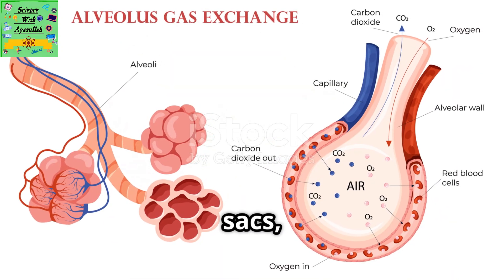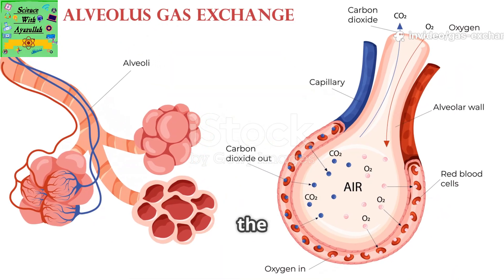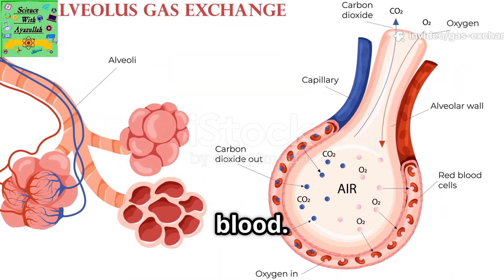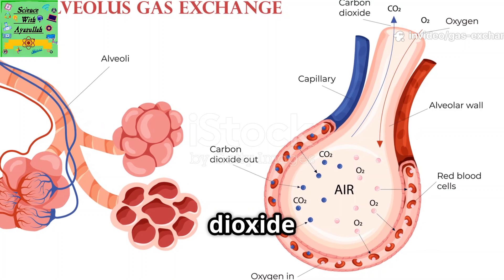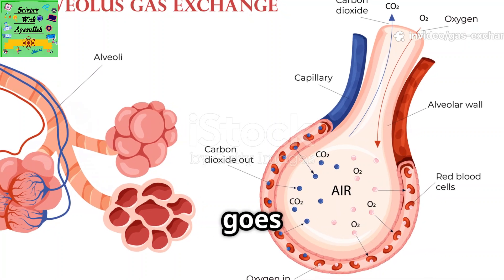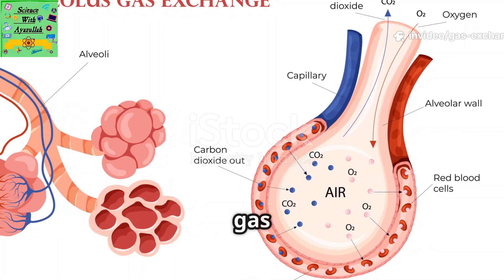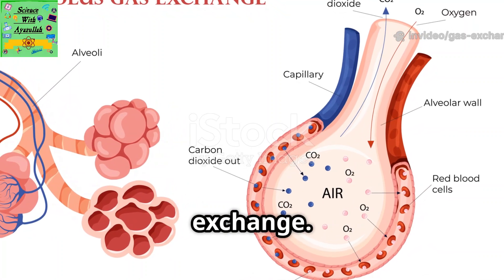Inside the air sacs, oxygen from the air goes into the blood. Carbon dioxide from the blood goes into the air. This is called gas exchange.